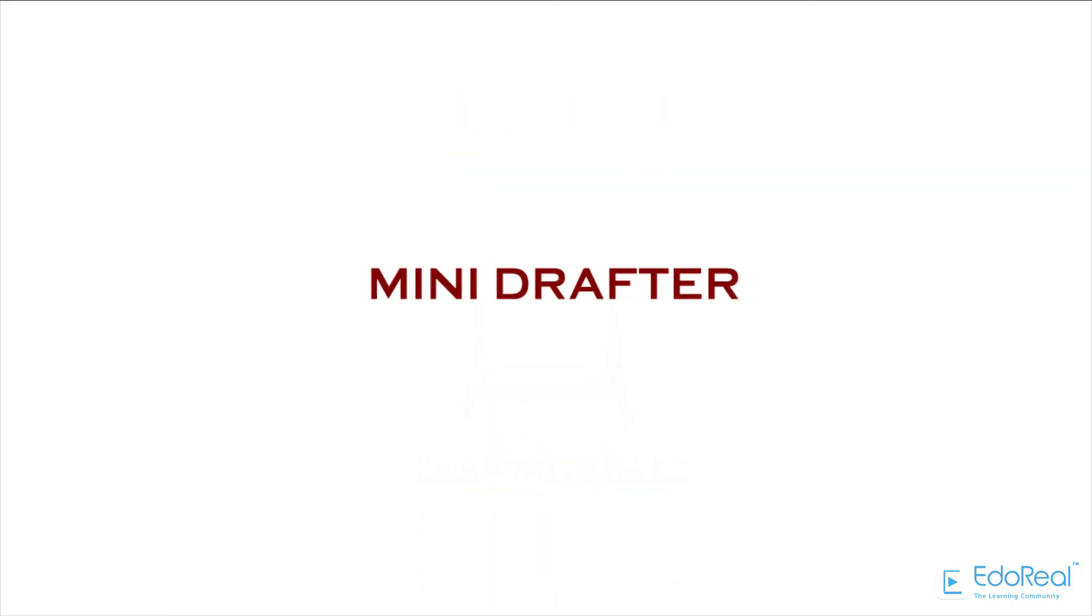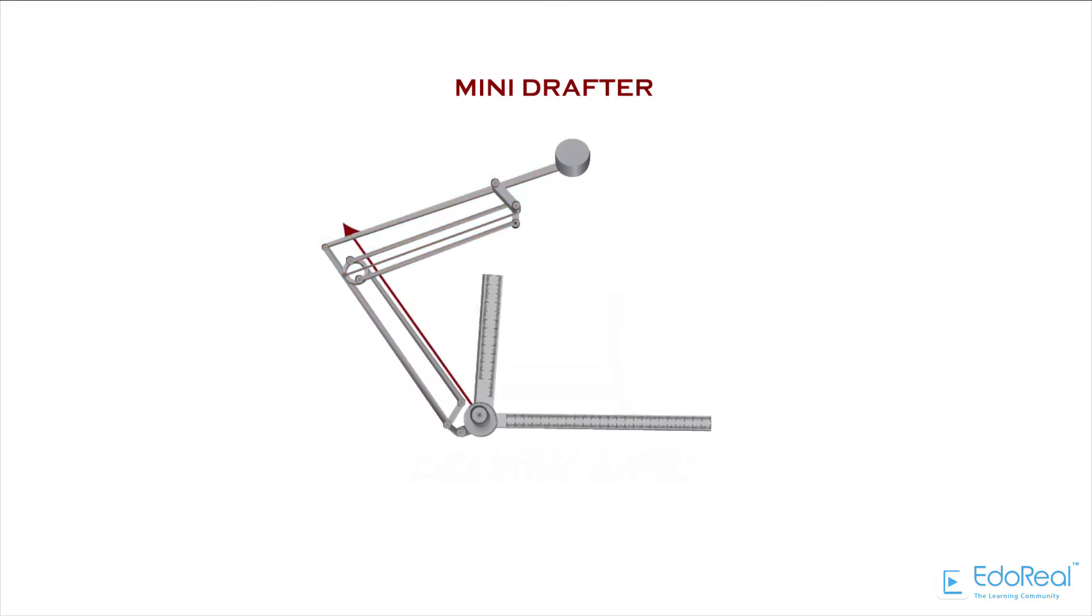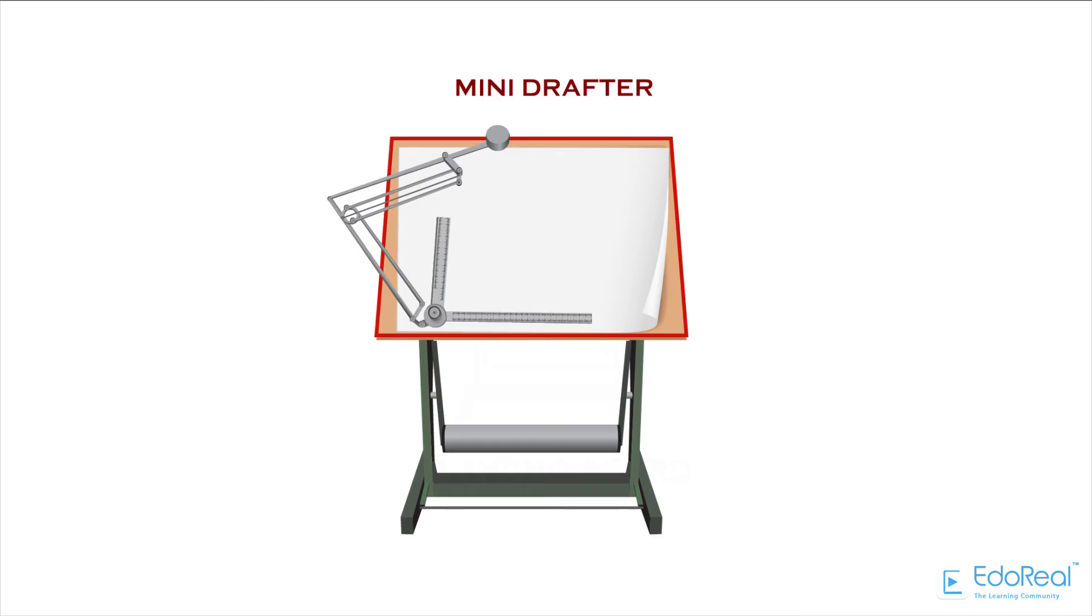Mini drafter is an instrument used for multiple functions in drawing. It contains two arms which are adjustable to required angle, and at the end of the lower arm, a scale set is attached. This instrument is fixed to the drawing board at one edge with the help of screw provided for the drafter.